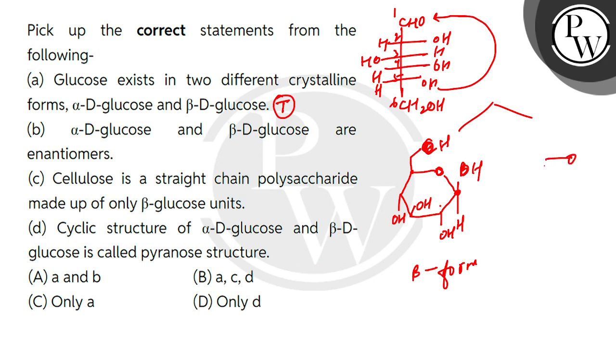If it goes below on C1, this is the hydrogen position. The rest of the situation is the same. So this is what will be called alpha form. So these two forms are cyclic forms and two crystalline forms. So we call them alpha-D-glucose and beta-D-glucose.